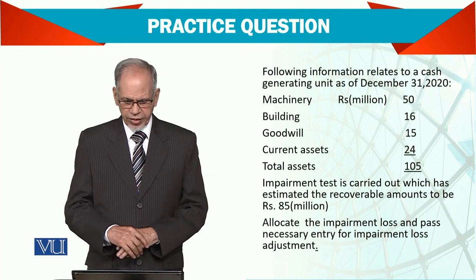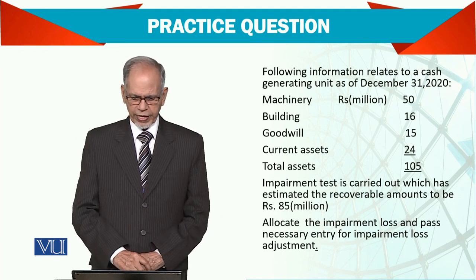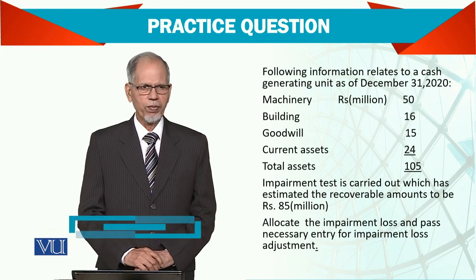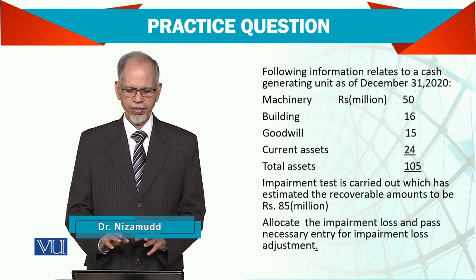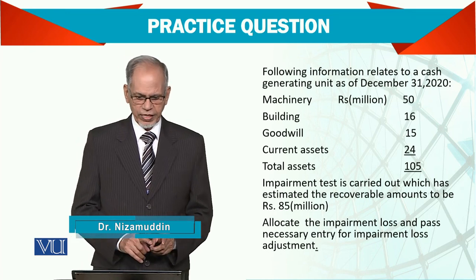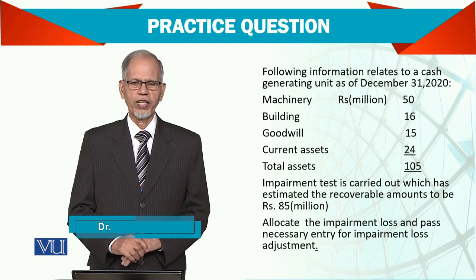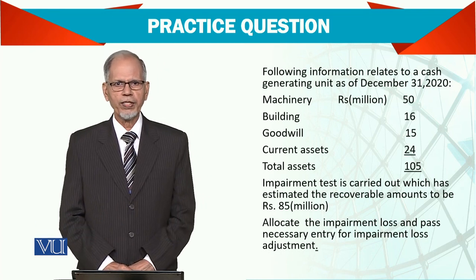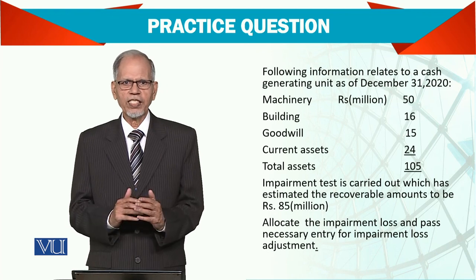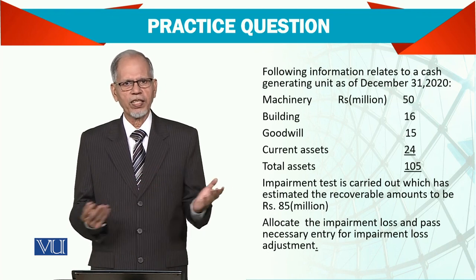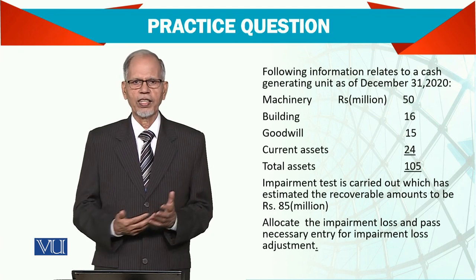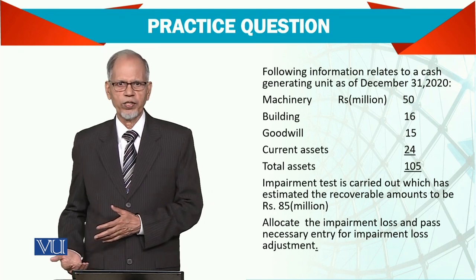Now an impairment test is carried out which has estimated the recoverable amount to be $85 million. So you can see: $105 million carrying value and now it is $85 million, so there is a reduction of $20 million. Simply, if it were just one asset, we would debit the difference of $20 million to impairment loss and credit the additional depreciation.